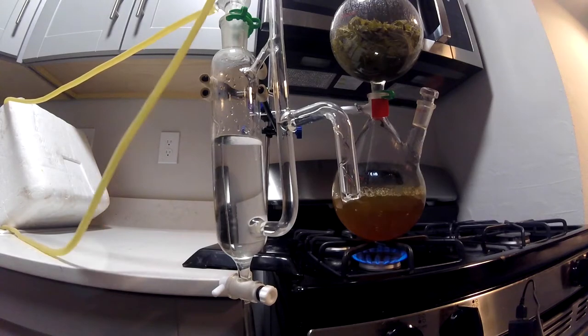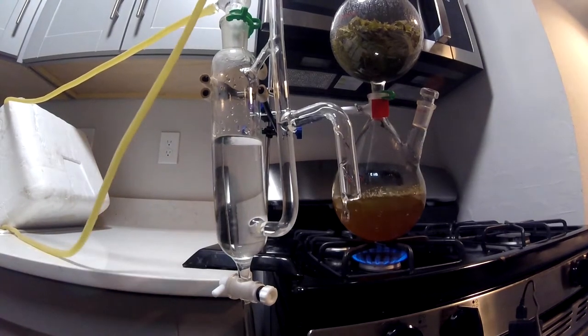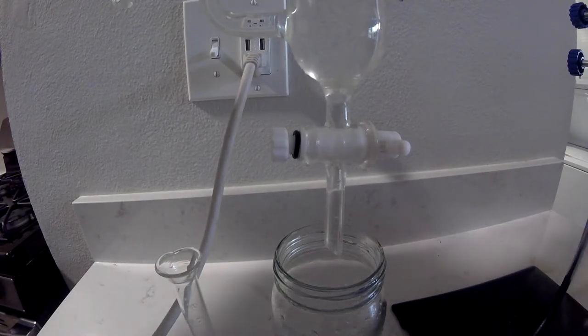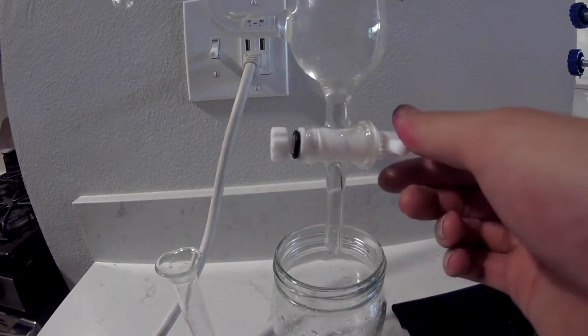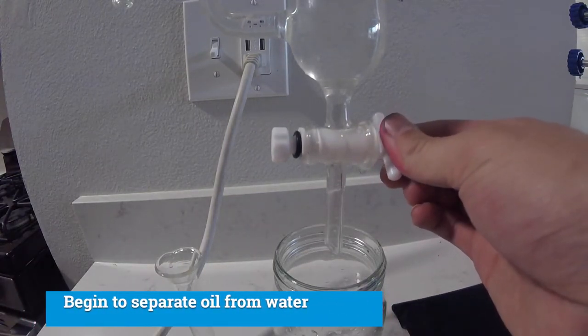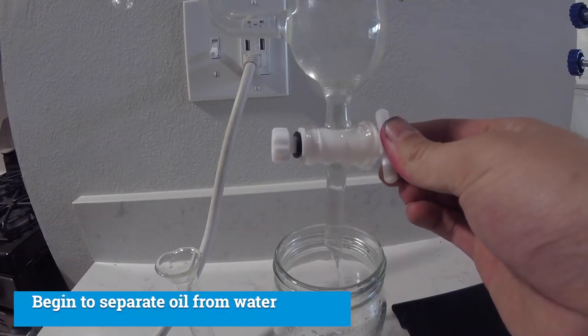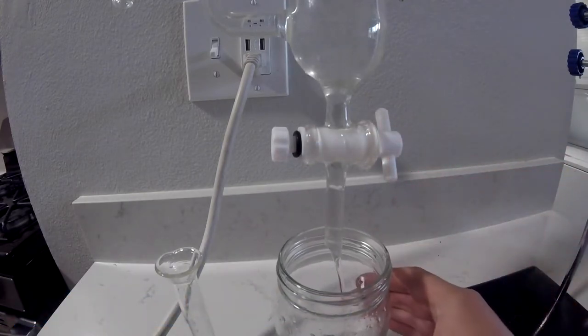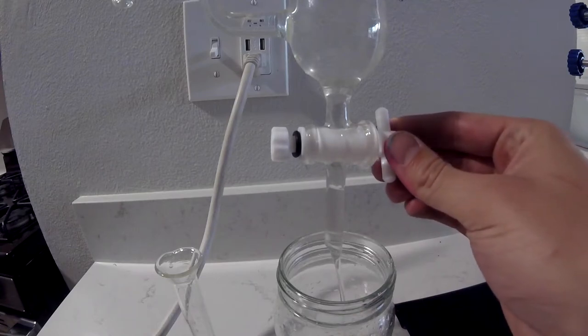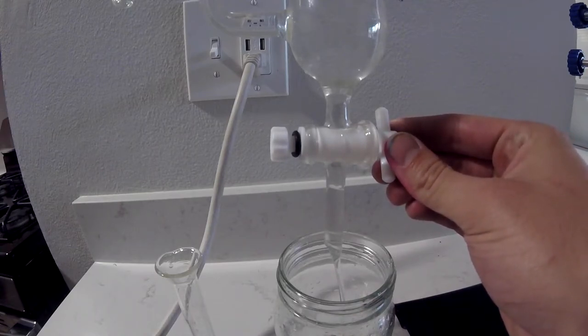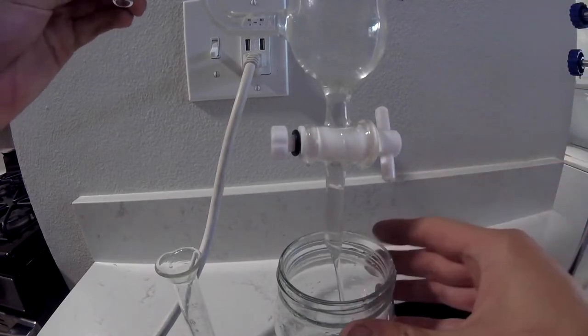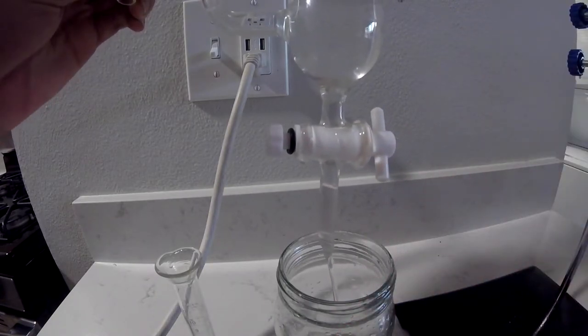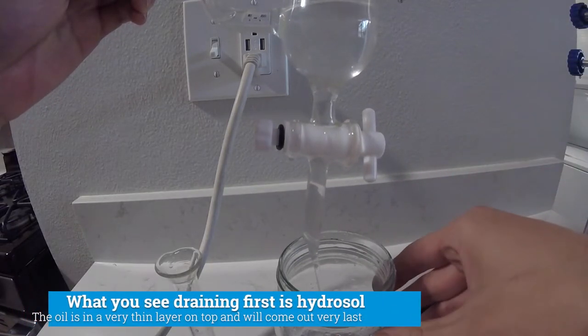The final step of the extraction process is to separate the oil from the water. Because the oil is less dense than the water, it floats on the top. This allows us to trickle the water out from underneath until just the oil remains. Then we switch containers and collect the final precious resulting drops of oil in our chosen container. In this case, we put the oil in a graduated cylinder so we could measure it.